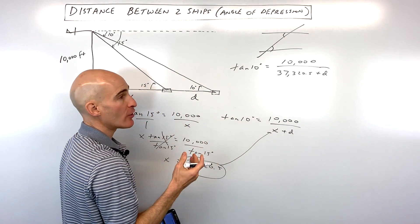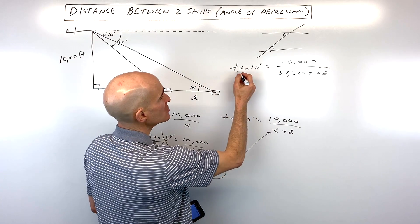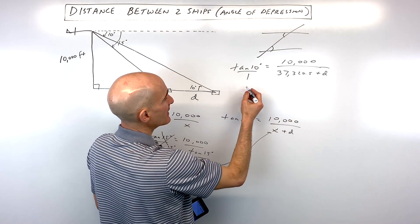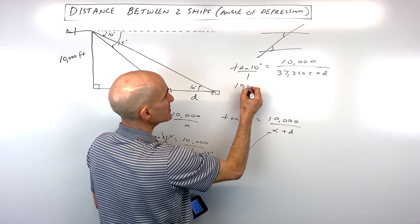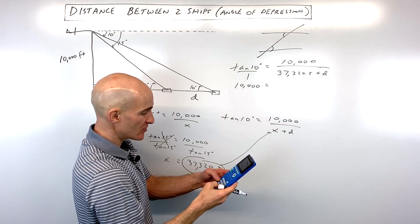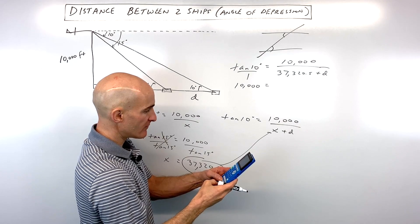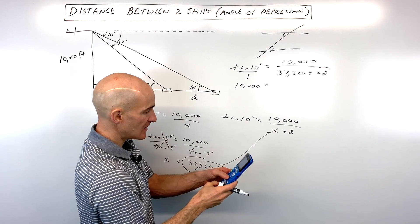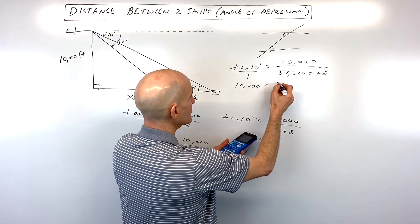Now we want to solve for d, we just have one variable, one equation. What we can do is we can cross multiply again. So 10,000 times 1 is 10,000. Tangent of 10, let's do that times 37320.5 times tangent of 10 comes out to approximately